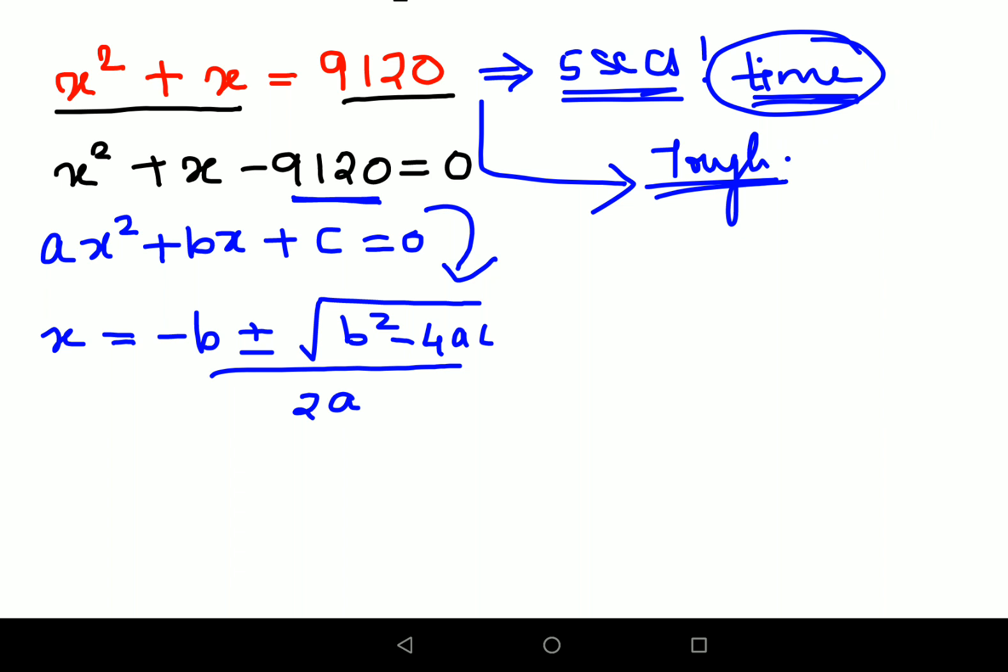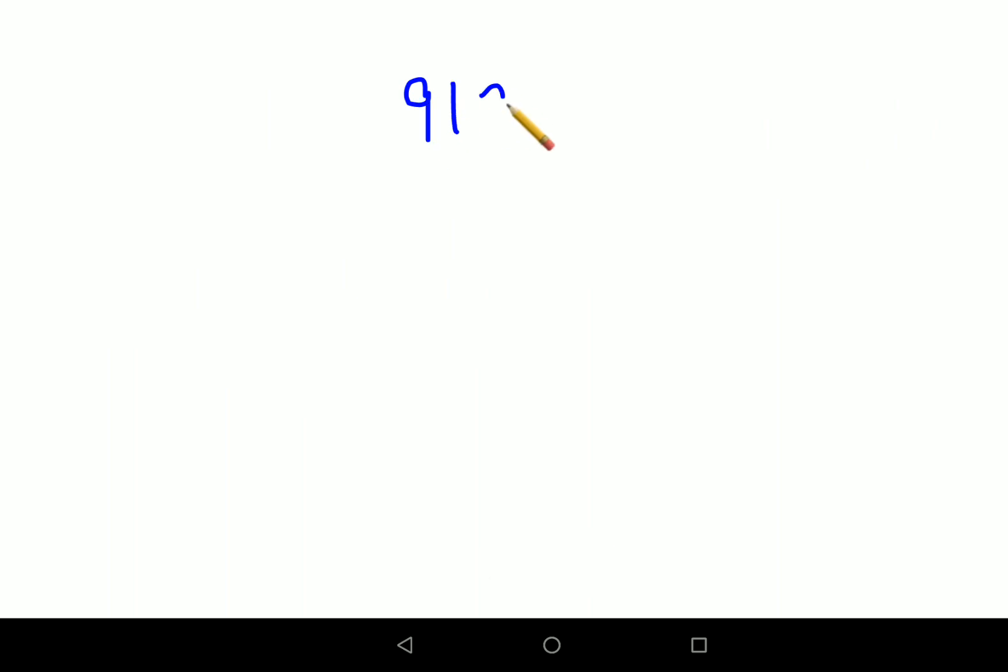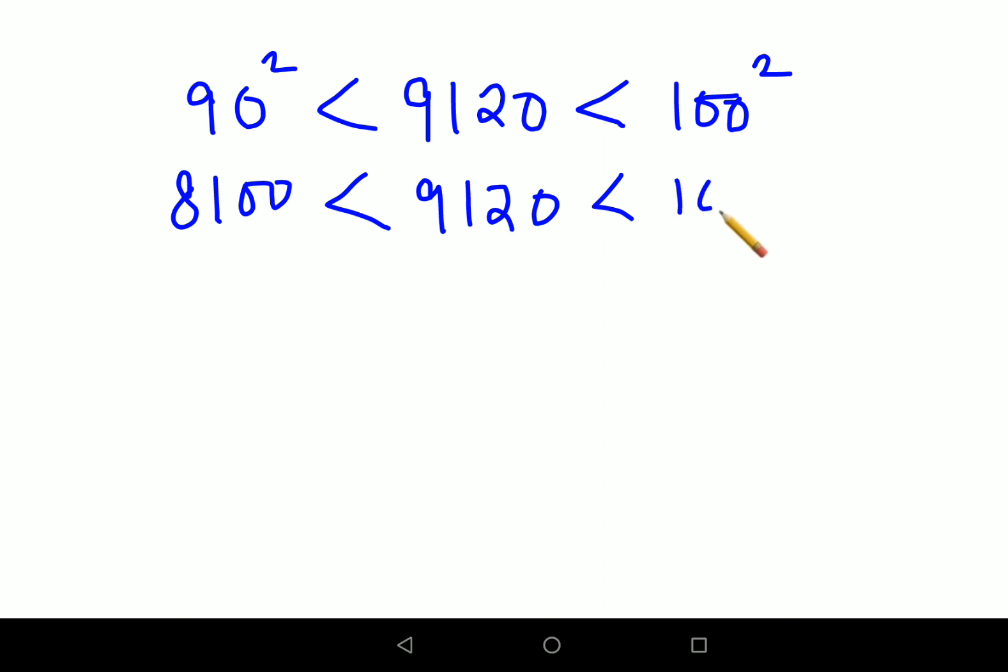Now coming back, let's focus on this number, which is 9120. If you look closely, this number is obviously smaller than 100² and greater than 90². Why? Because we know 90² = 8100, which is obviously much smaller than 9120, and 100² = 10,000. So from here, you've gotten an idea that the factors of 9120 can lie between 90 and 100.